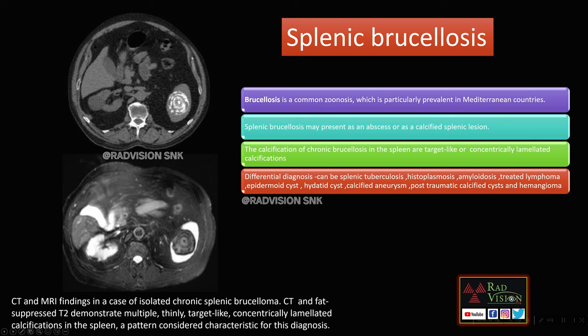Splenic brucellosis is a common zoonosis particularly seen in Mediterranean countries. It may present as an abscess or a calcified lesion; when calcified, it typically presents as a target-like or concentrically lamellated calcification mimicking the onion-peel appearance. Differential diagnosis includes epidermoid cyst, hydatid cyst, calcified aneurysm, splenic tuberculosis, histoplasmosis, amyloidosis, treated lymphoma, post-traumatic calcified cyst, and hemangiomas.